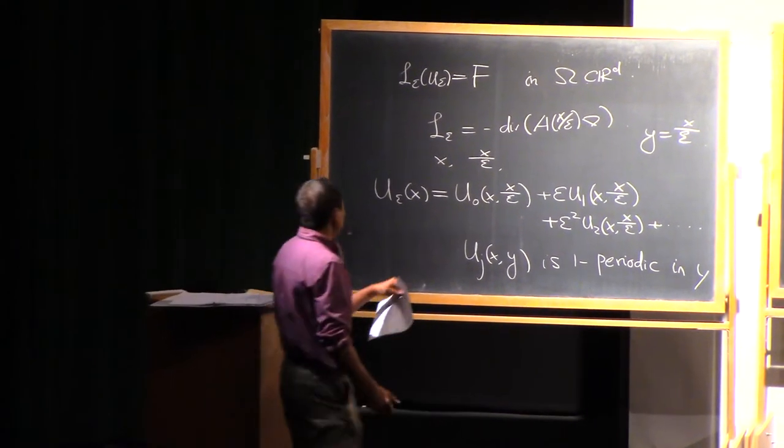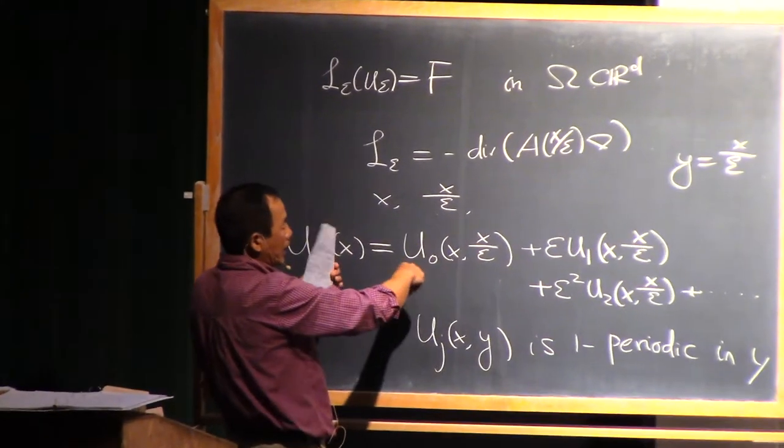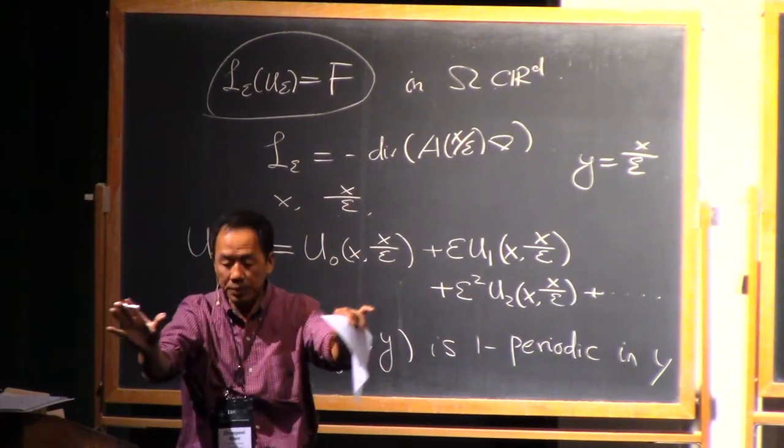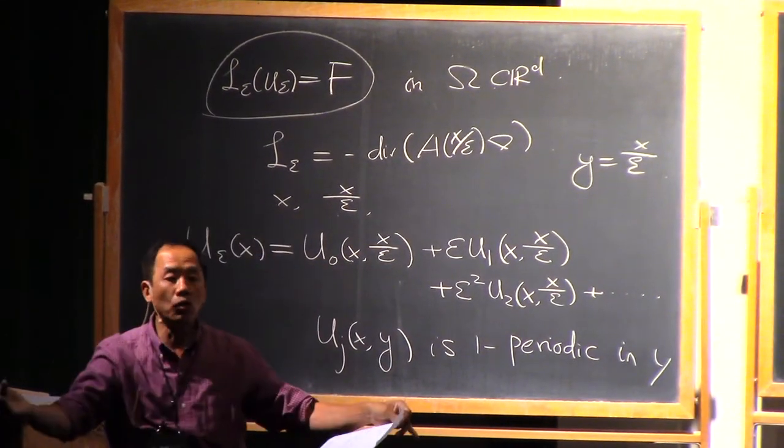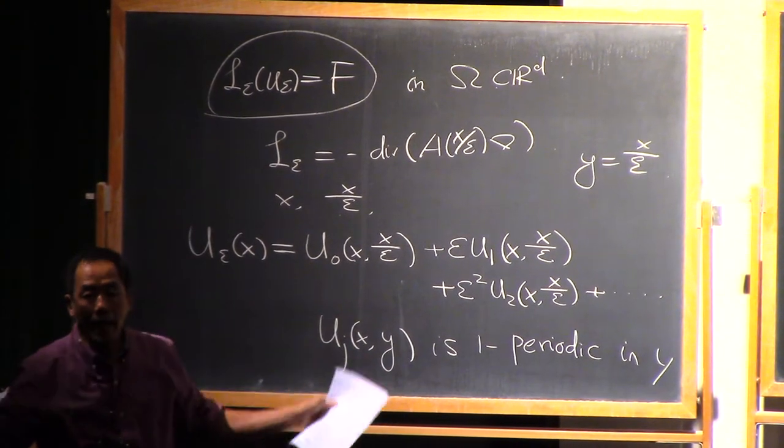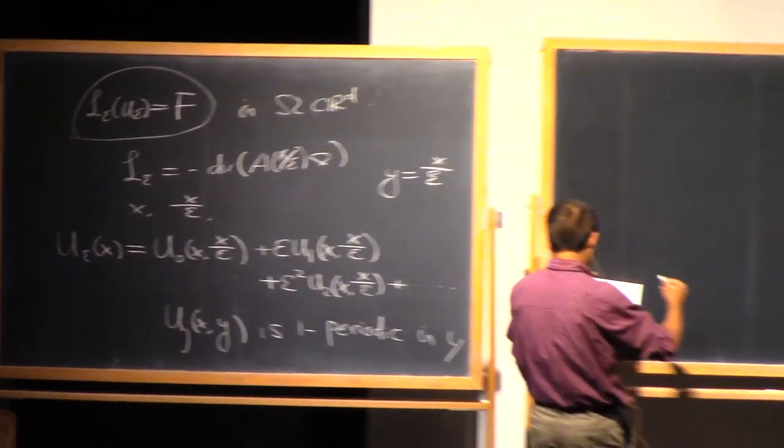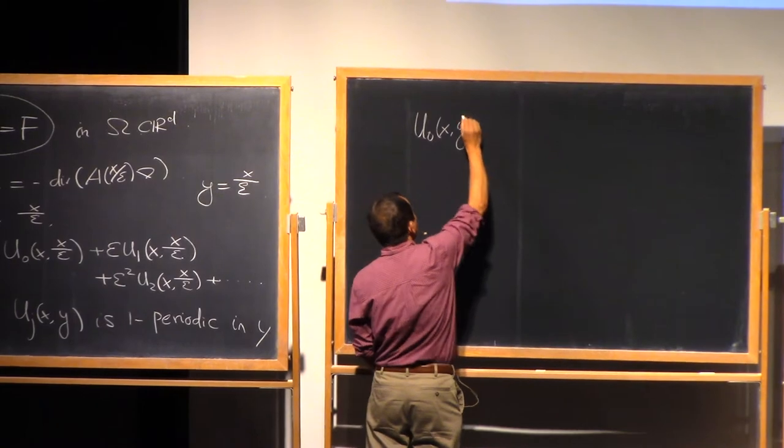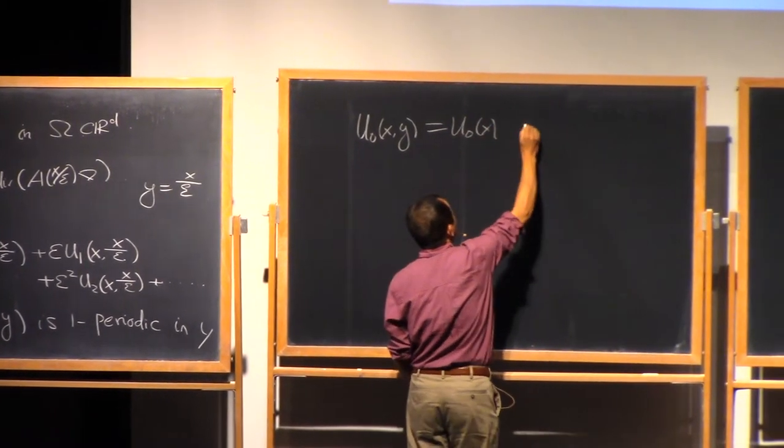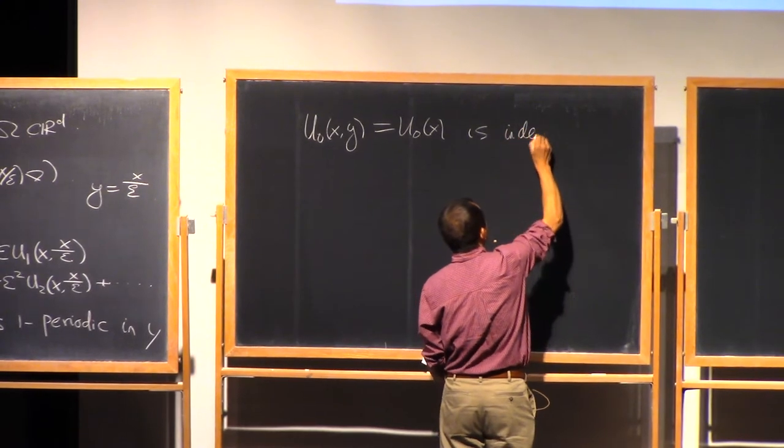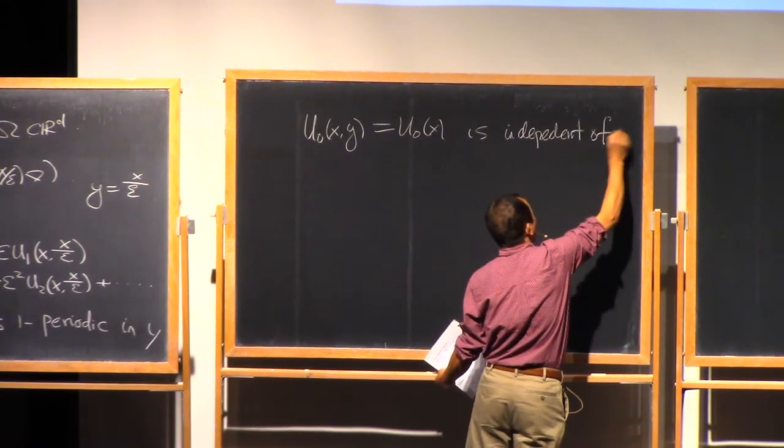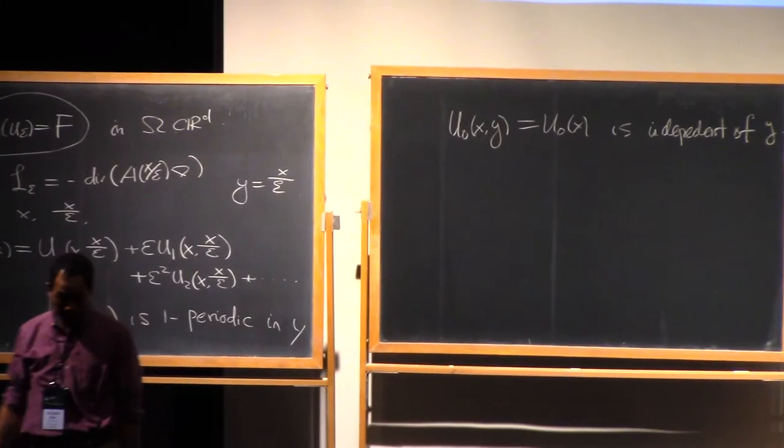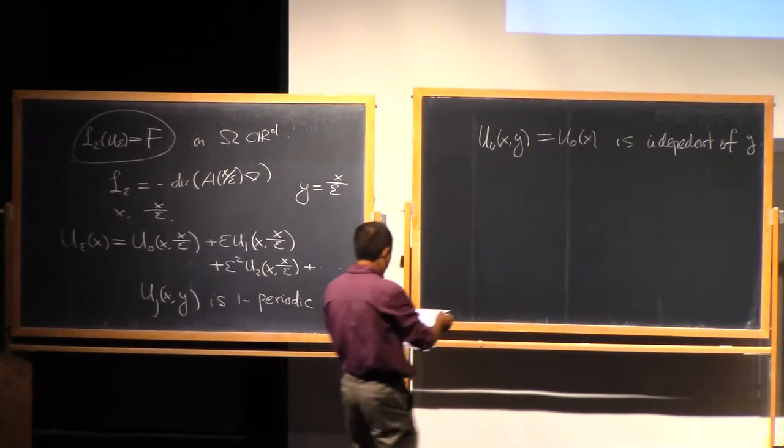Then you put this infinite series into this equation, and you equal the terms with the same power of y on both sides. You actually end up with, you deduce that the first term does not depend on the second variable. U_0 is independent of y. This U_0 actually is the limit of U_y.